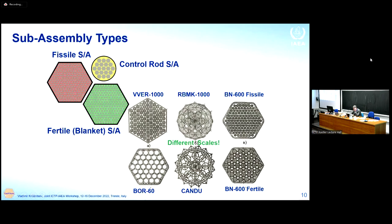The slide also compares several hexagonal designs for the VVER-1000, RBMK-1000, and sodium-cooled fast reactor BN-600, as well as the cylindrical shape of the CANDU reactor and hexagonal PHWR-60. Note there are different scales, so you shouldn't compare them directly — the slide just shows the possible geometries.